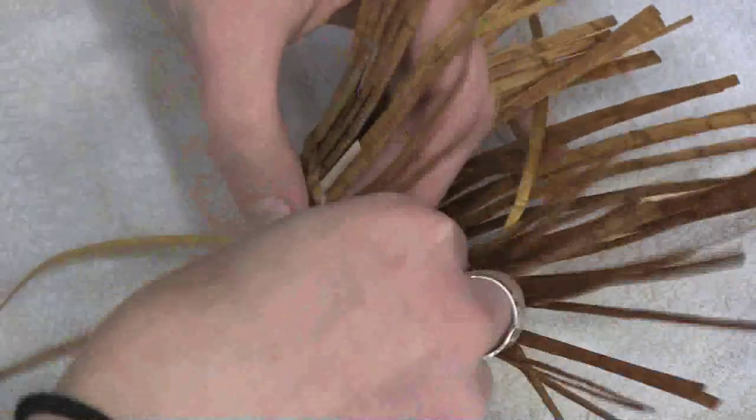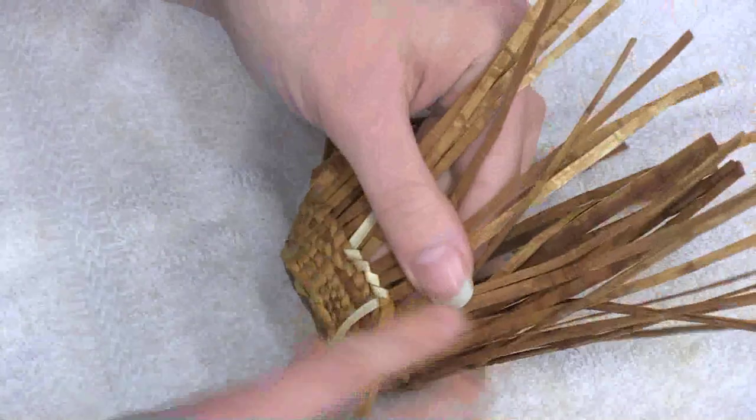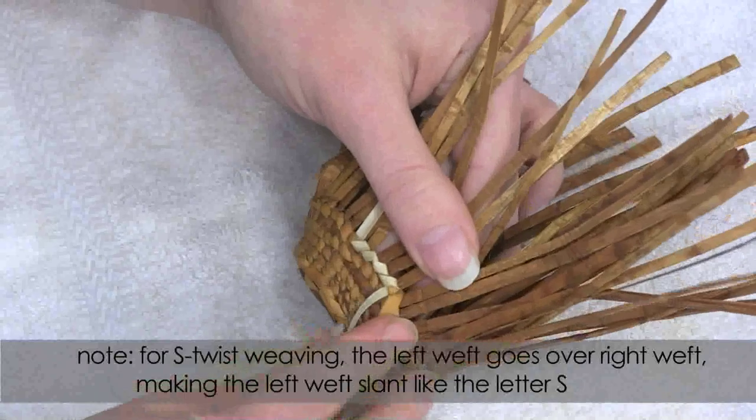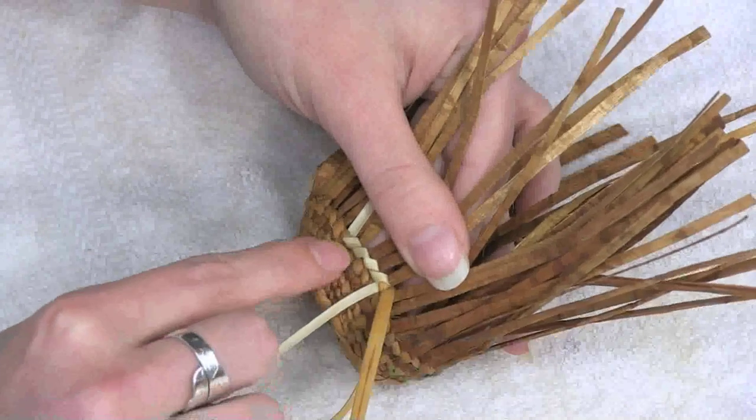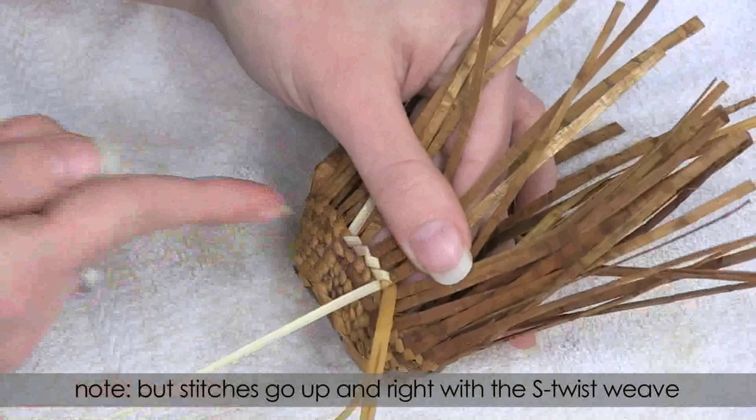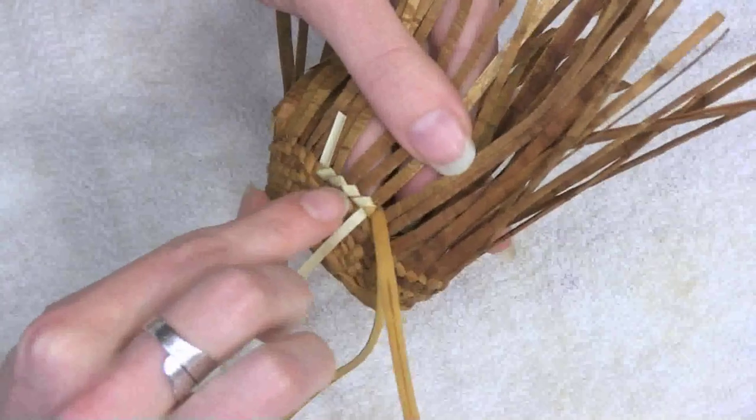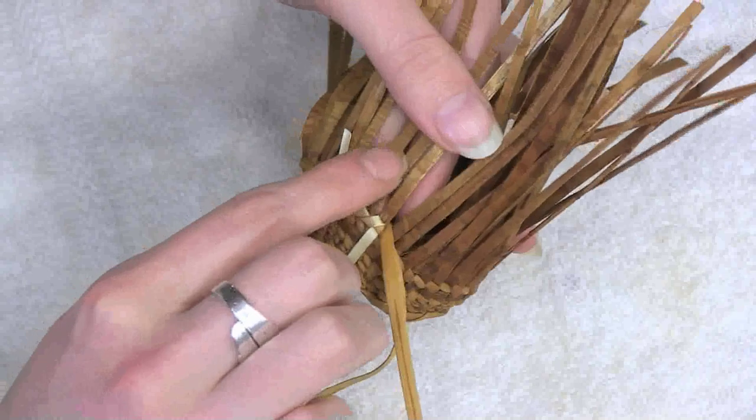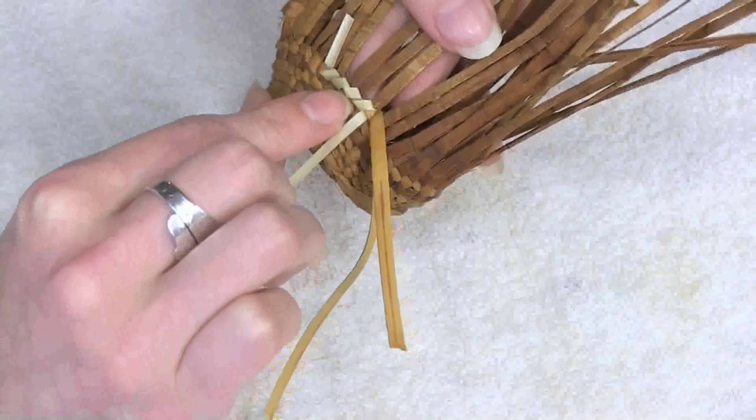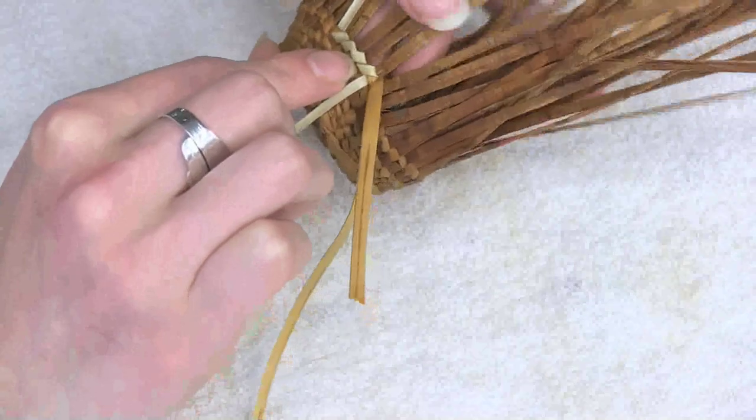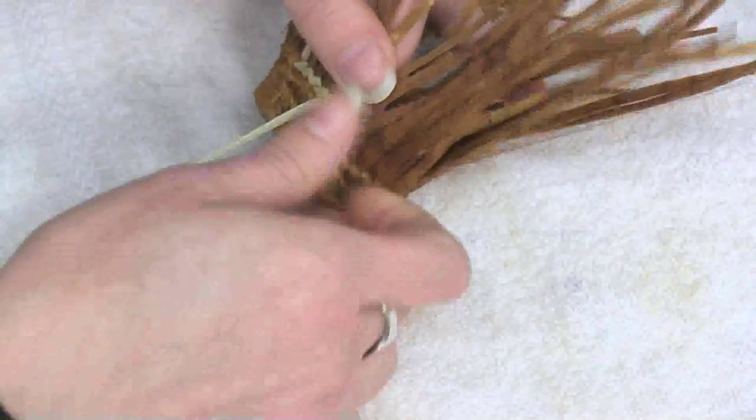And the false embroidery, you can see that it's an S twist compared to the Z twist of the rest of the basket. They're going this way. And if you look closely you can see that the design itself is filling the space between the two warps. I'm doing this false embroidery with the canary grass, but you can also do this style false embroidery with the maiden's hair fern.